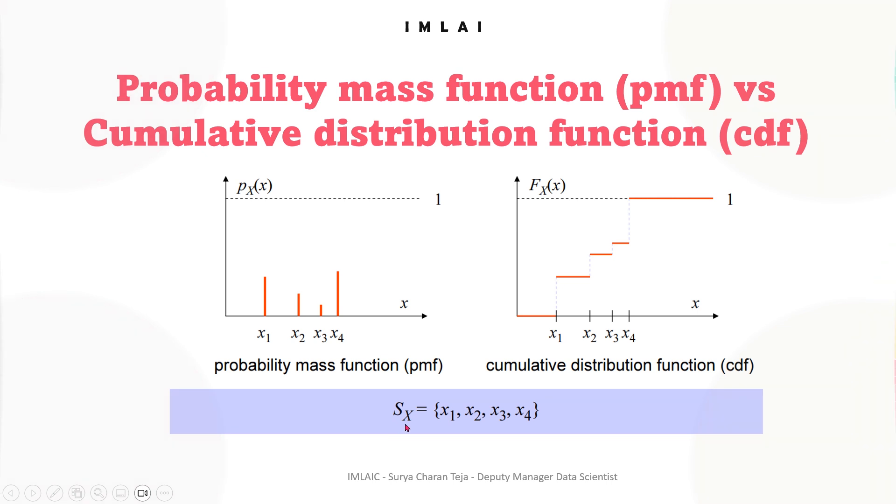So Sx, that's our sample space, equals x1. The sample space set consists of, because it's a discrete random variable capital X, it consists of x1 value, x2 value, x3 value, x4 value - only four values.